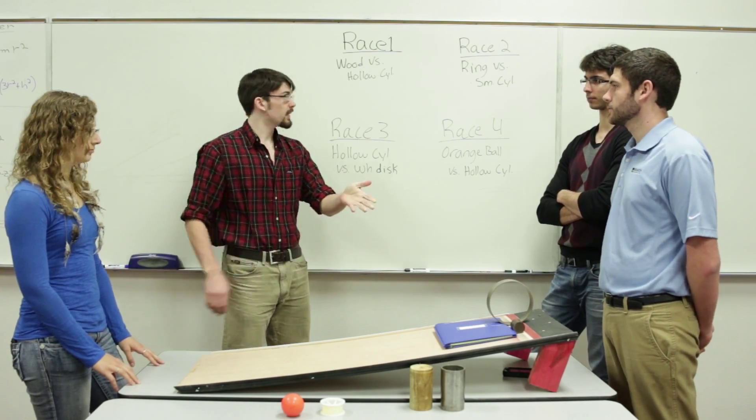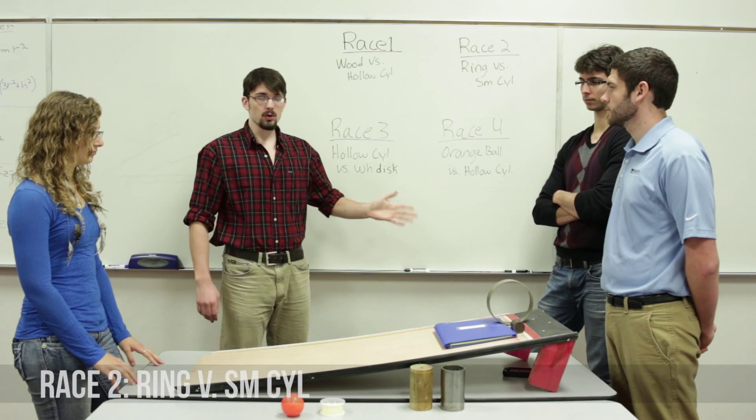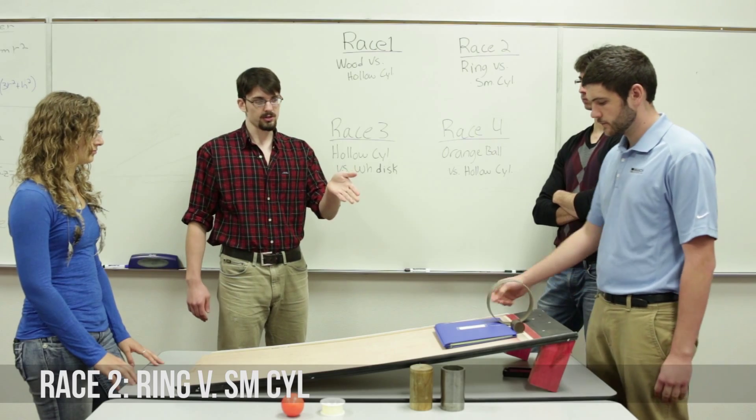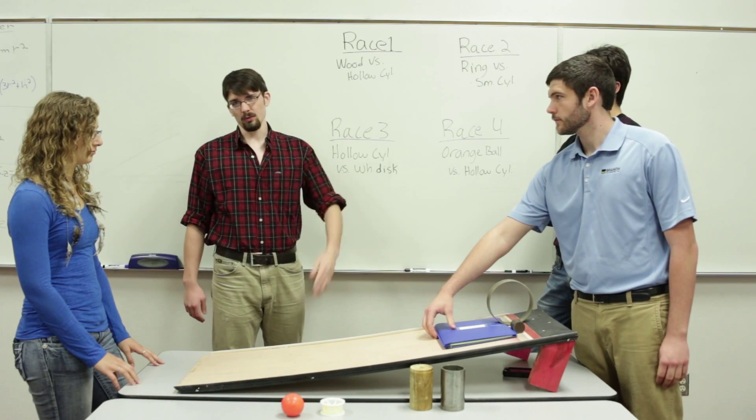For the second race, we have the ring and a small cylinder. According to Tony's calculations, the small cylinder has a smaller moment of inertia. Therefore, it should win the race.